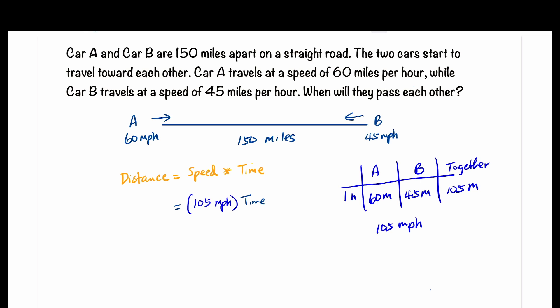Our distance is 150 miles. To get time alone, we divide 150 by 105 miles per hour on both sides. This gives us approximately 1.43 hours.